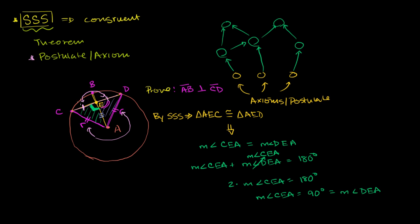So this angle right over here is 90 degrees, and this angle right over here is 90 degrees. Because AB intersects CD and we have a 90-degree angle on both sides, they are perpendicular to each other.